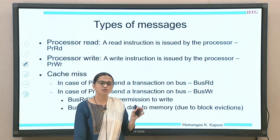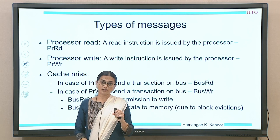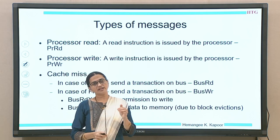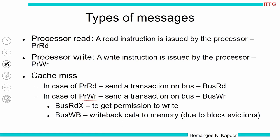For a write miss, instead of sending a bus write, we send a bus read X. In VI we simply sent a bus write because it was write-through. In MSI, we send a bus read X — where X stands for exclusive. We want exclusive access to this cache block because we are going to modify the data. So we are asking permission to write this block. When a bus read X transaction goes on the interconnect, any other cache holding this block must relinquish it and give full permission to this cache to modify it.